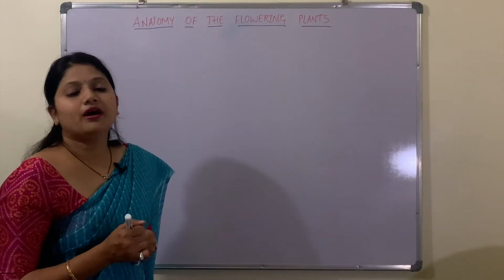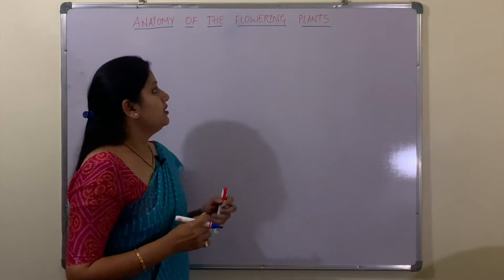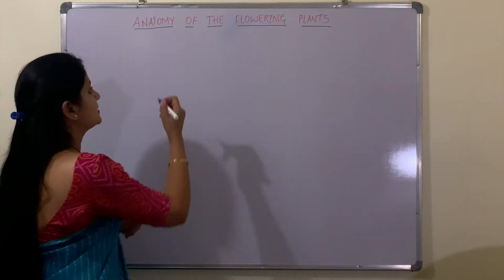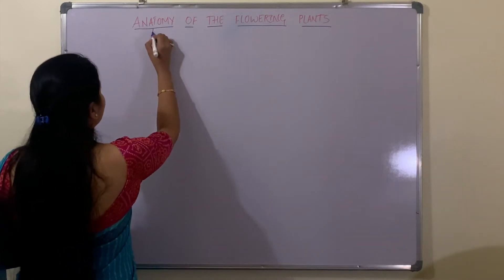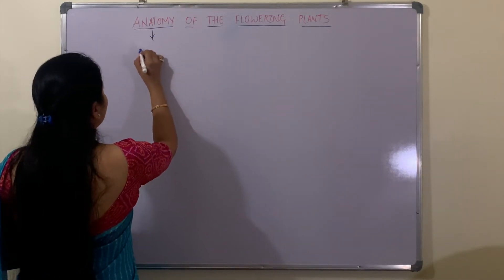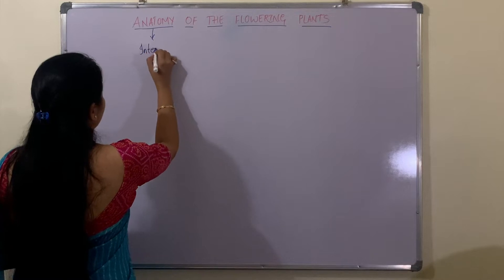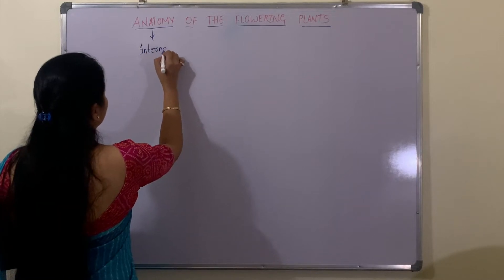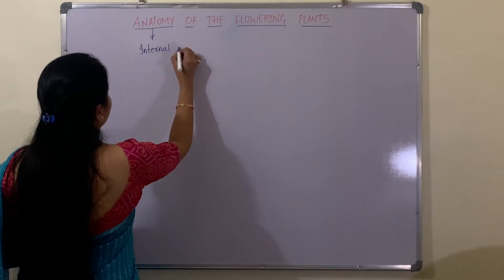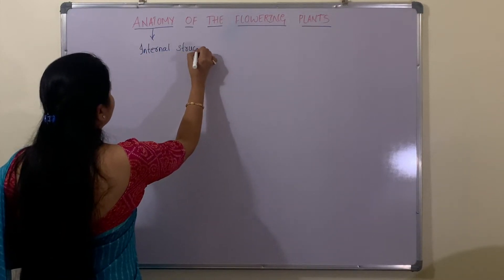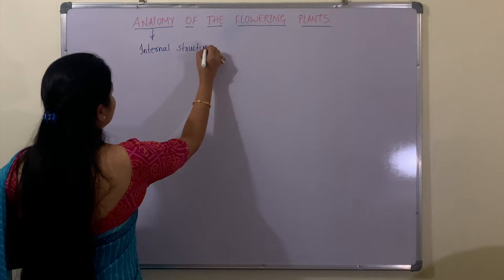To start with Class 11, that is Anatomy of the Flowering Plants — what do you mean by anatomy? Anatomy is the study of internal structures.